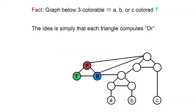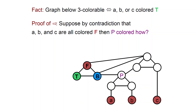Here is the main fact which explains why the clause gadget was designed this way. We claim that the clause gadget graph is 3-Colorable if and only if at least one of A, B, or C is colored true. In other words, this implements the OR in a clause — each triangle in this graph computes OR in some sense. Let's prove the forward direction by contradiction: suppose A, B, and C are all colored false.